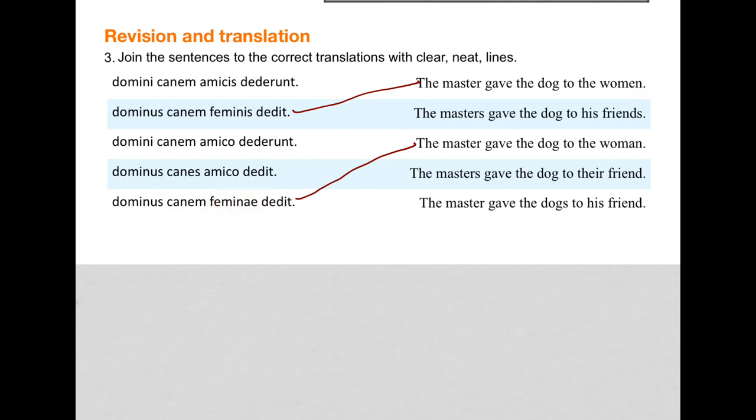We've got a distinction between 'masters' and 'master' here. So we can just find the one with the singular master. And we can see dominus, domini, domini. The master is singular here. So we can just choose dominus. So let's do that one. We can check it if we like. The master gave the dogs to his friend. Dogs is plural. Amico is dative singular. So that's all okay. So two more left.